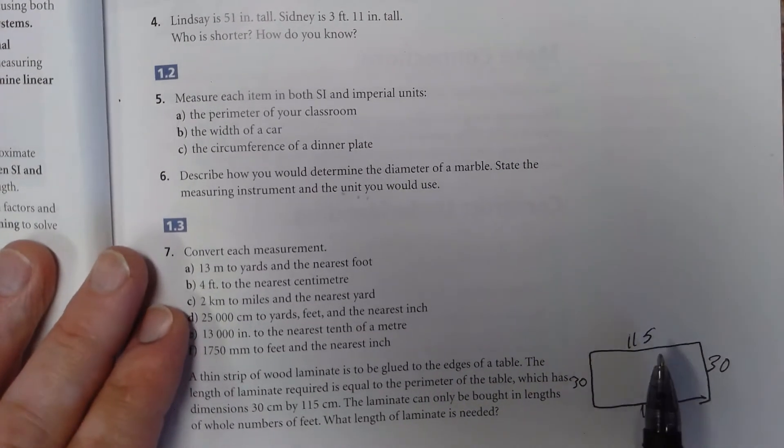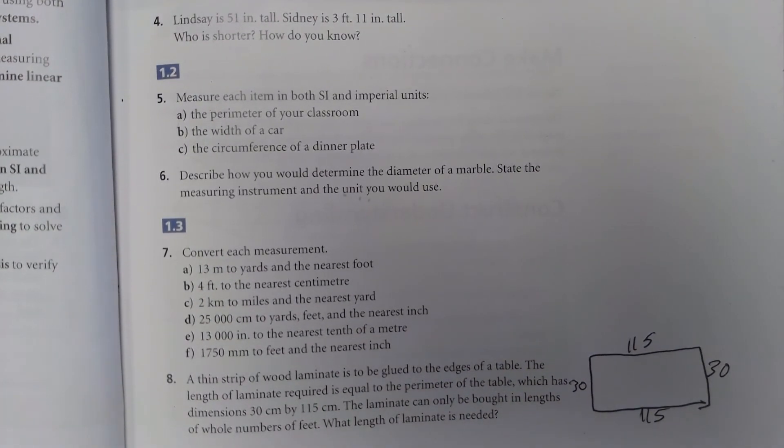But you're buying the laminate in feet, so take the number that you get from adding all of this up - 30, 30, 115, 115 - take those numbers, add them up, get your total, and then convert that into feet.